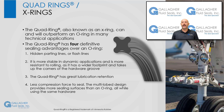An X-ring is more stable in dynamic applications and is also more resistant to rolling with its wider footprint. The X-ring has great lubrication retention — the grooves on the inside and outside diameters of the ring retain lubricant, thereby lowering friction and extending seal life. The multi-lobe design of an X-ring provides more sealing surfaces than an O-ring, all while using the same hardware configuration. With these multiple seal points on one ring, less squeeze is required to provide an effective seal. Less friction and wear will ultimately increase service life and reduce downtime.